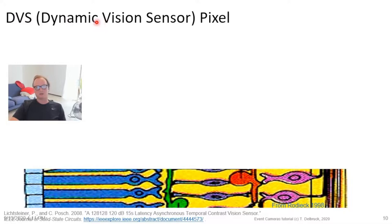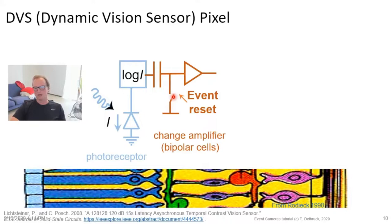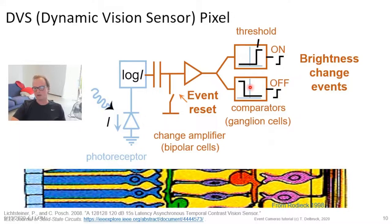These considerations led to the invention of the Dynamic Vision Sensor (DVS) pixel. Looking at a cross-section of the retina, the DVS pixel starts with the photoreceptor driven by a photodiode, going into a three- or four-transistor logarithmic photoreceptor circuit running in continuous time. This is capacitively coupled to a change amplifier mimicking the bipolar cells. The change amplifier is reset by closing a switch every time the pixel sends out an event, and amplifies the change in log intensity by about a factor of 20.